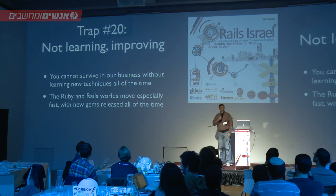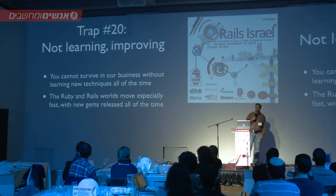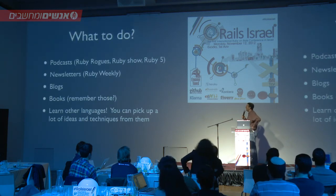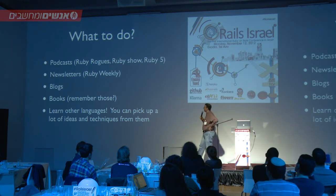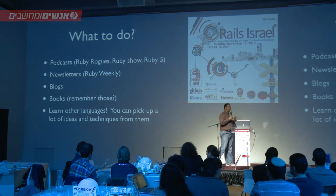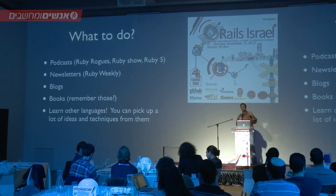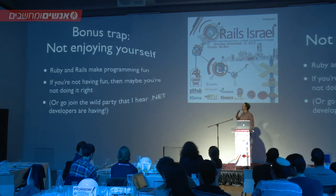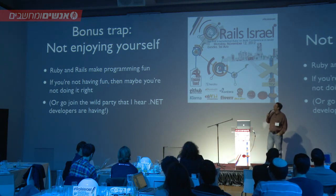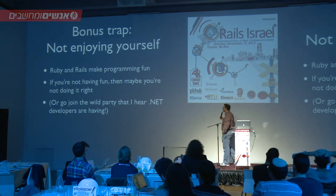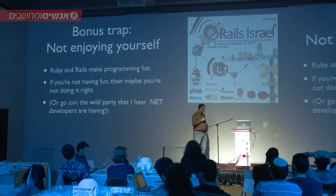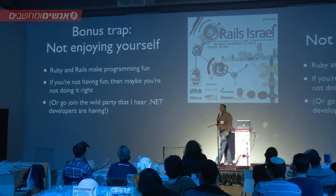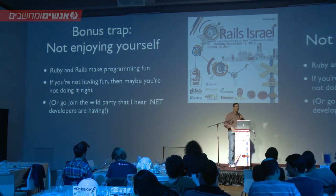The last main trap is not learning and improving. This is true in most technologies, but especially true in the Ruby and Rails world. You've got to always keep learning. There's no excuse because there are so many ways — podcasts, newsletters, blogs, books, and other languages. It all comes back and helps you in your work. It's rare for me to learn something new and not be able to apply it with a client within a week or two. And one last bonus trap: you're really having problems if you're not enjoying yourself. Ruby and Rails are supposed to make programming fun — Ruby is optimized for programmer happiness. If you're not having fun, you might be in the wrong business or using the wrong language. Thanks a lot and I'll be happy to answer questions if we have time.